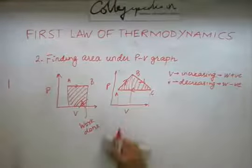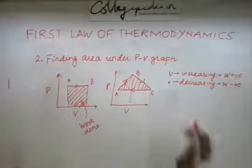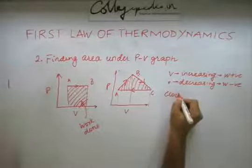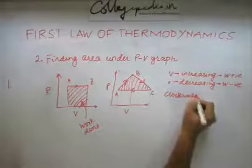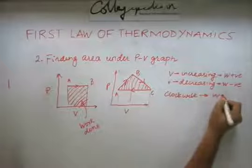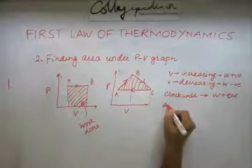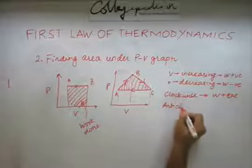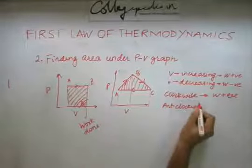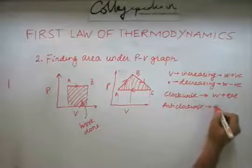So the sign convention in such a cycle is, if you go clockwise, you get a positive work. And if you go anti-clockwise, you get a negative work.